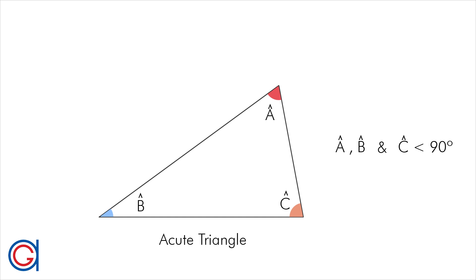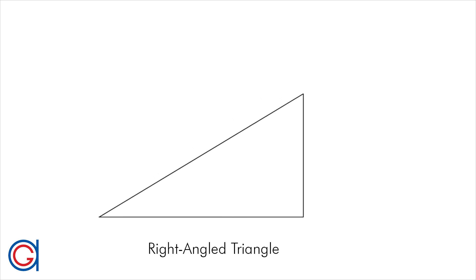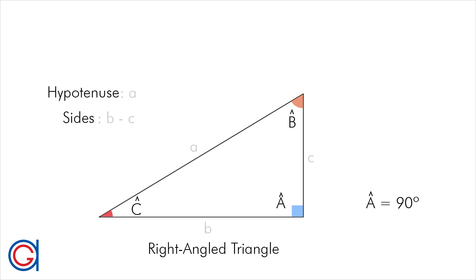So if the triangle contains one 90 degree angle, we call this special type of triangle a right angled triangle, or a right triangle. In this type of triangle, the shorter sides B and C are called the sides, or the legs, and the longer side A, which is always opposite the right angle, is called the hypotenuse.